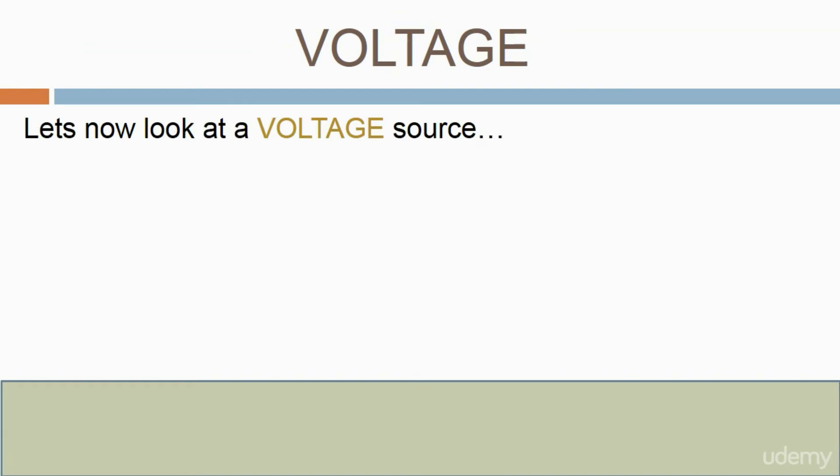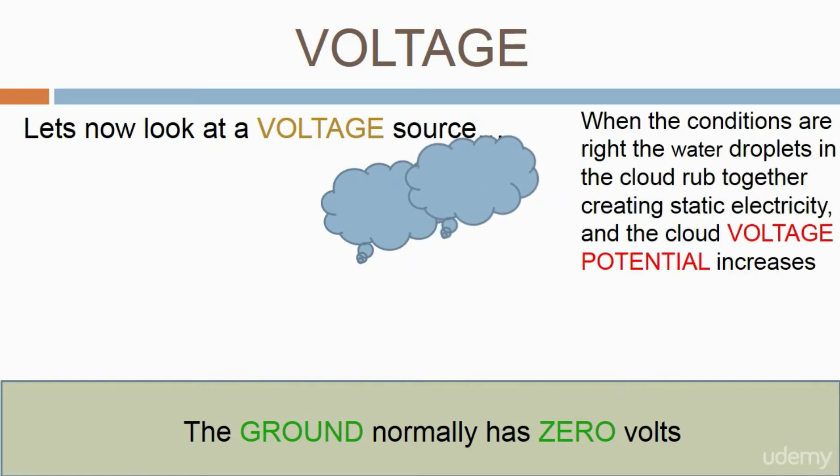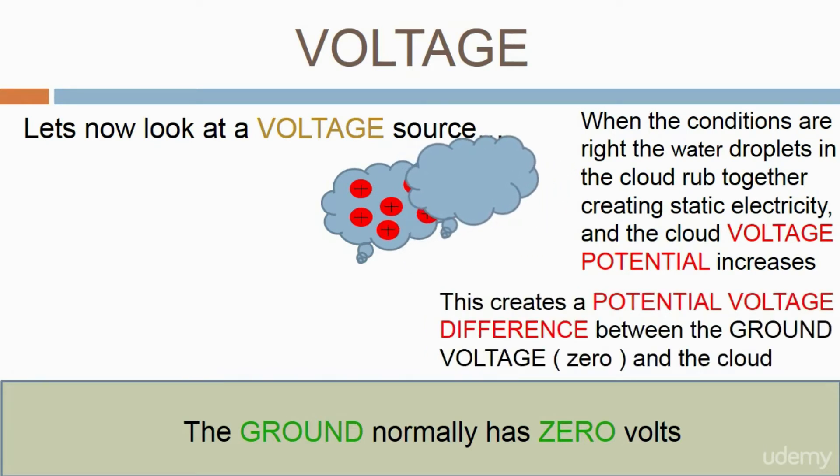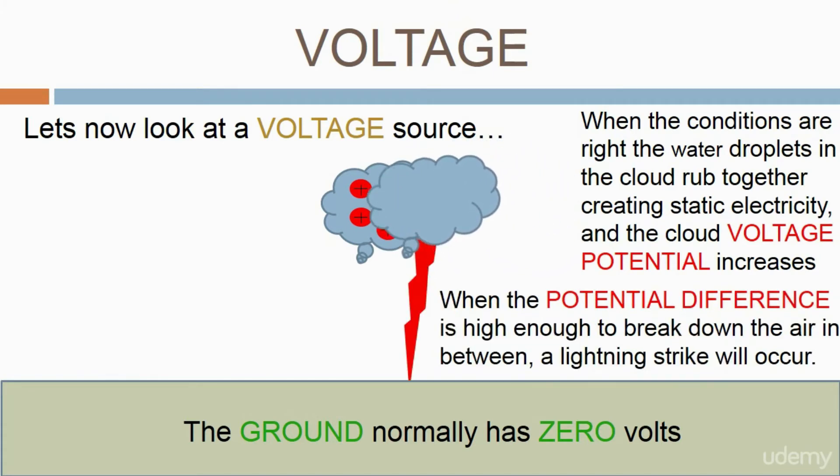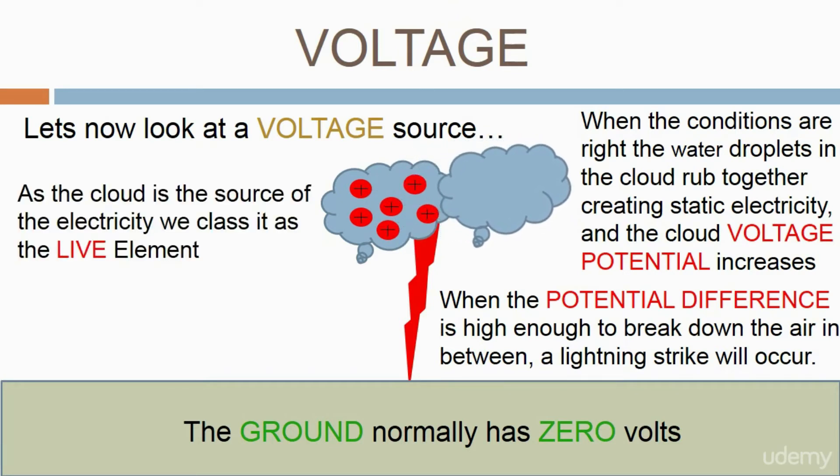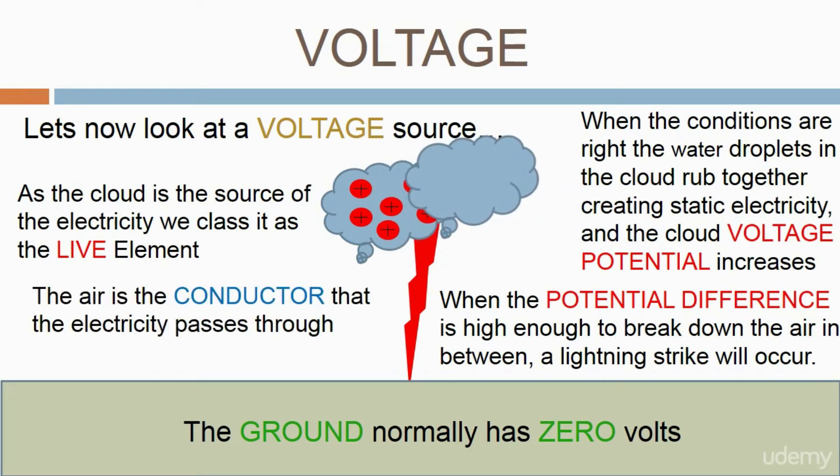Let's now look at a voltage source we are all familiar with. The first thing to remember is the ground normally has zero volts. Let's look at some clouds in the sky. When the conditions are right, the water droplets in the cloud rub together creating static electricity, and the cloud voltage potential increases. This creates a potential voltage difference between the ground voltage, which is zero, and the cloud. When the potential difference is high enough to break down the air in between, a lightning strike will occur. As the cloud is the source of the electricity, we class it as the live element. The air is the conductor that the electricity passes through.